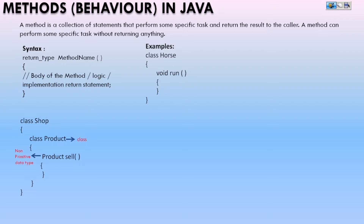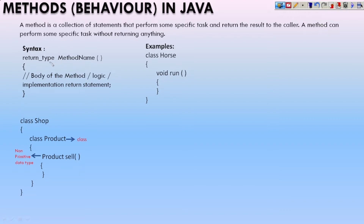First thing — what is a method? A method is a collection of statements that perform some tasks and return the result to the caller. A method can also perform some specific task without returning anything as well. There's a syntax for this.